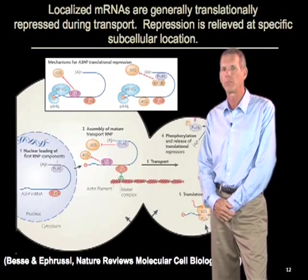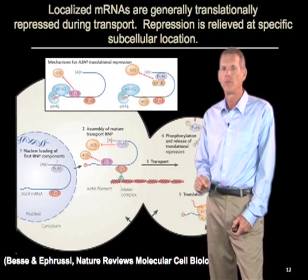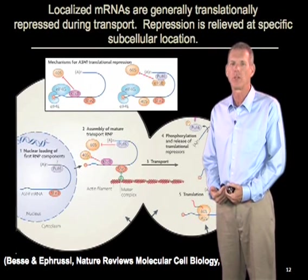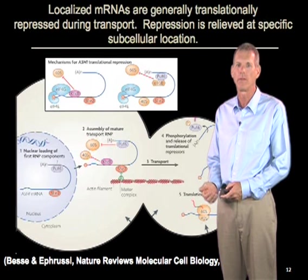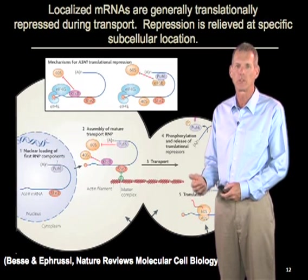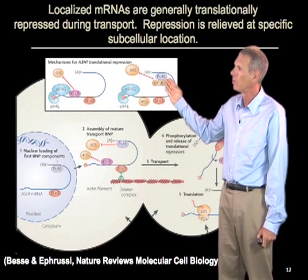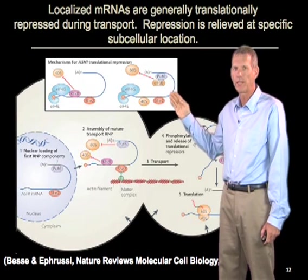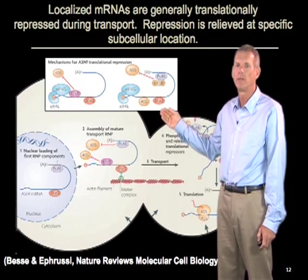Another important general principle of RNA transport is that mRNAs are translationally repressed during the transport process. This is important for two reasons. First, by repressing the mRNA so it's not translated prior to localization, you target protein production to the specific region of the cell where you want it. Second, by repressing translation of the mRNA, you limit ribosome interaction, decreasing the total molecular mass of the complex which needs to be moved — presumably greatly facilitating transport to distal regions. In the case of the ASH1 mRNA, two RNA binding proteins, PUF6 and KHD1, bind to the RNA and repress the loading of ribosome subunits. The fact that there are two mechanisms illustrates how important it is to keep these localized mRNAs from being translated prematurely.